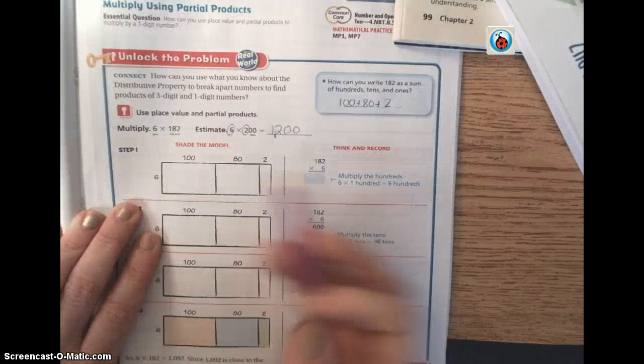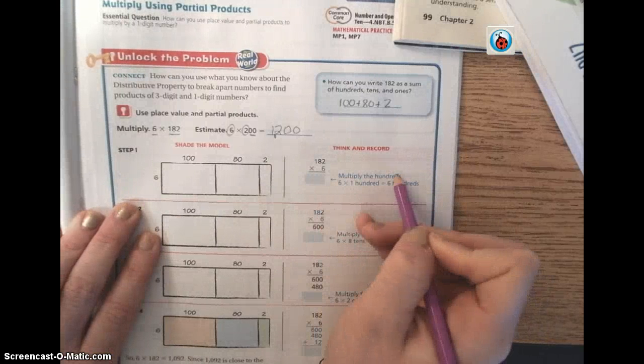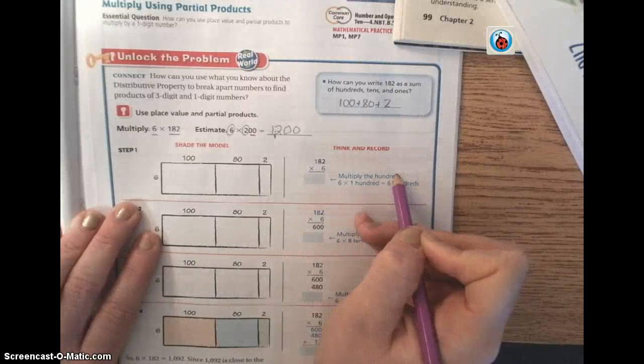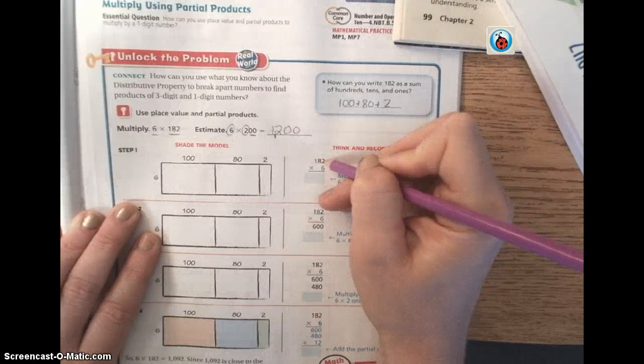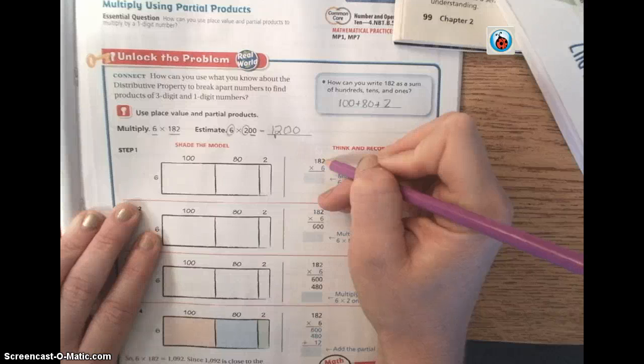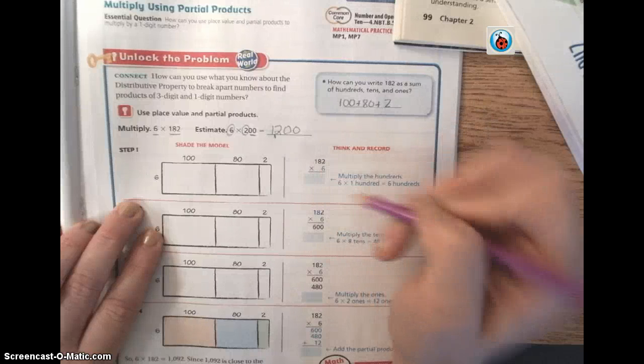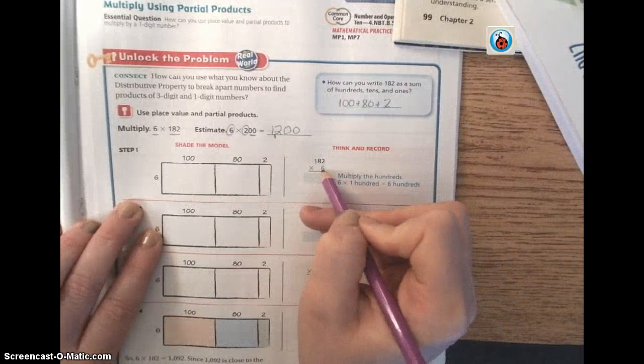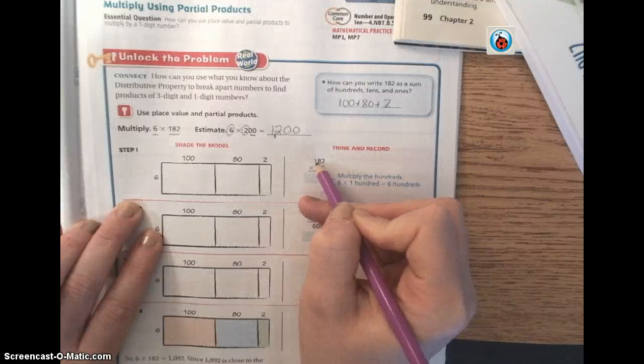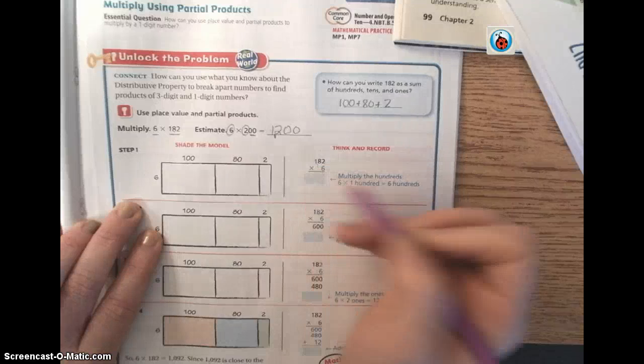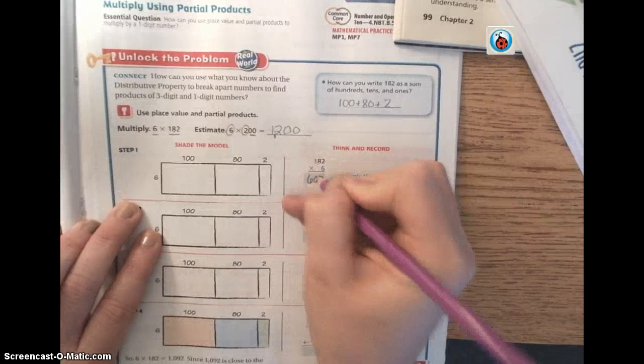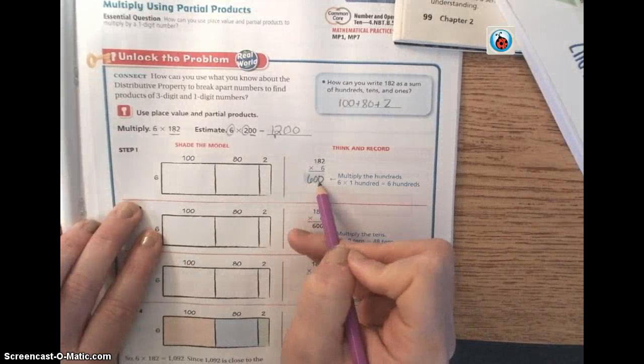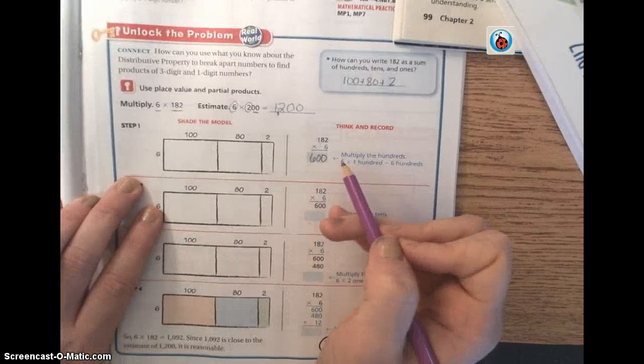Down here on step 1, it's telling you to multiply the hundreds first. I know that that is confusing because in the standard way that we taught you, 6 times 2 would be the first thing that you do. When you're doing partial products, you're going to actually multiply the hundreds first. So you're going to take this 6 and you're going to multiply it by the hundreds. Think in your heads, how many hundreds are there? There are one hundreds. So 6 times 100 is equal to 600. And this product down here is going to be one of the numbers that you're going to add in to make your product.